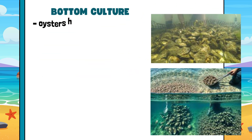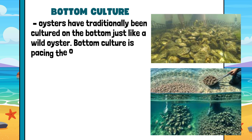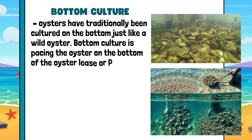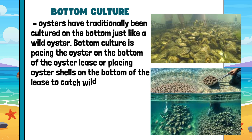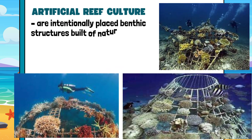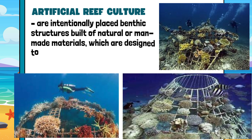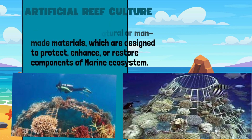Bottom culture: Oysters have traditionally been cultured on the bottom, just like a wild oyster. Bottom culture involves placing the oyster on the bottom of the oyster lease, or placing oyster shells on the bottom of the lease to catch wild oysters. Artificial reef culture structures are intentionally placed benthic structures built of natural or man-made materials which are designed to protect, enhance, or restore components of marine ecosystems.